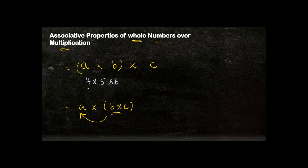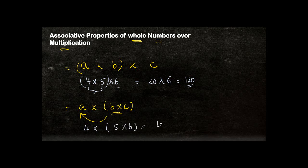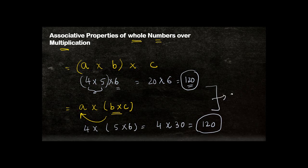Let's look at this with numbers: 4 times 5 times 6. First, multiplying 4 times 5 gives 20, and 20 times 6 gives 120. Now instead, multiplying 5 times 6 gives 30, and 4 times 30 also gives 120. The answer in both cases is the same.